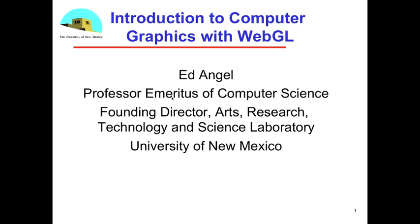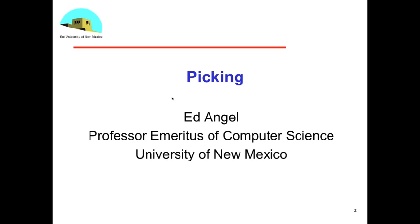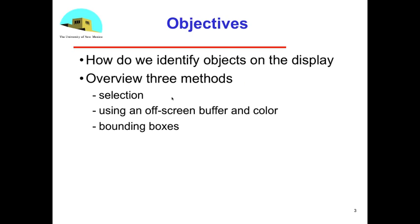I want to add one more short piece to our discussion of interaction and animation, and that's the notion of being able to pick an object. What that means is that we can point to something on the display with typically a mouse or some other device and identify not a position but an object, and somehow be able to use the position that's returned from the mouse to get that identification of an object.